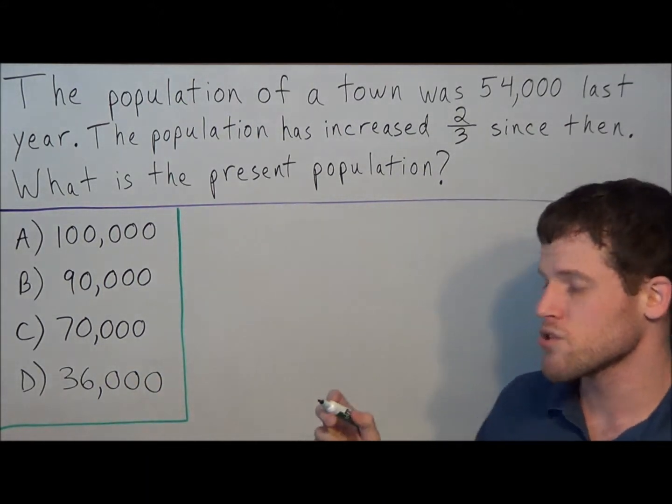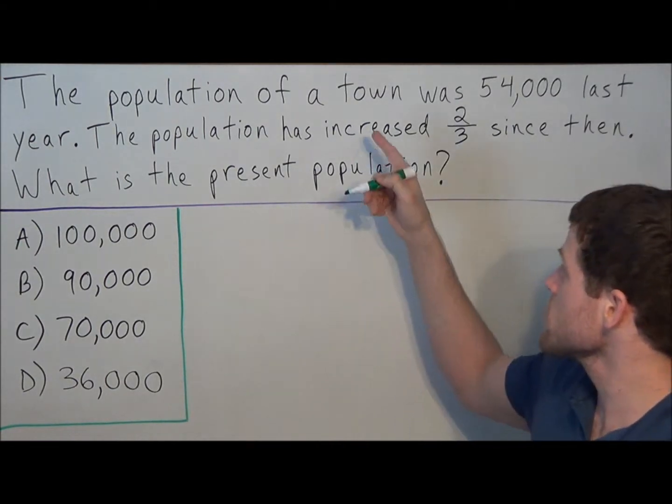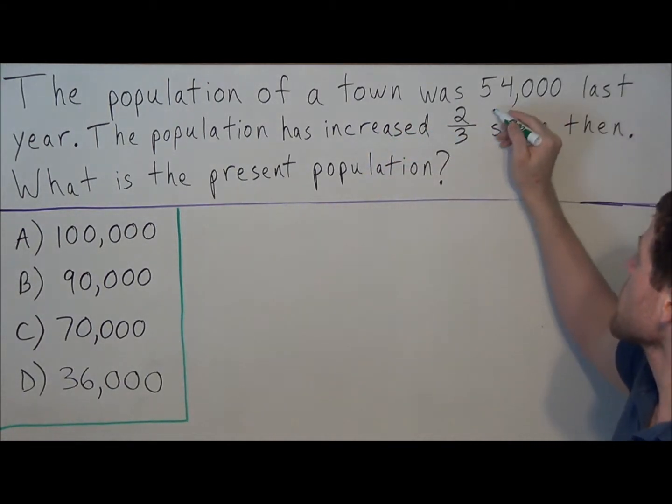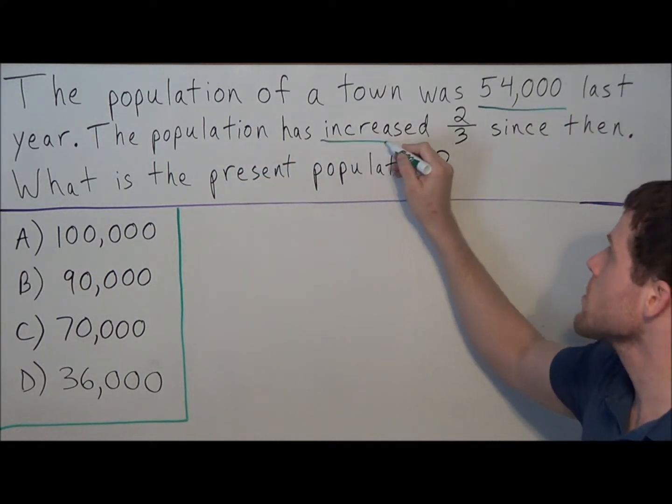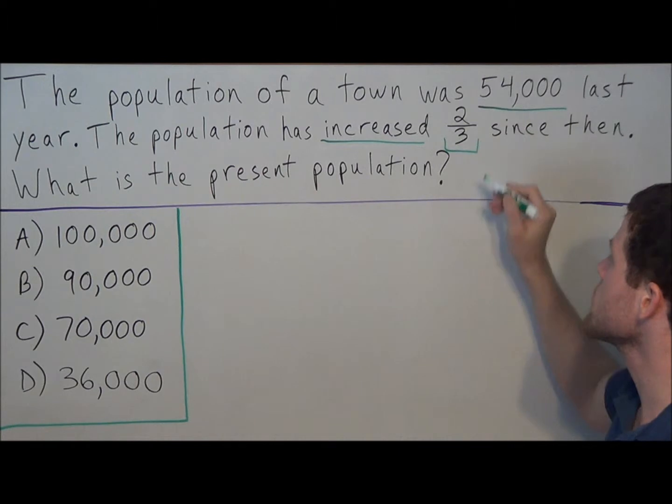So for this example here, the first thing we should do with any word problem is underline key information. We know that there were 54,000 people in the town last year, and that the population increased two-thirds since then.